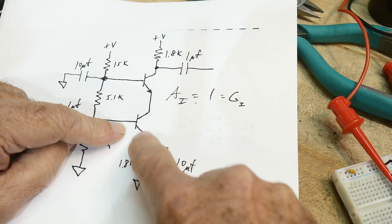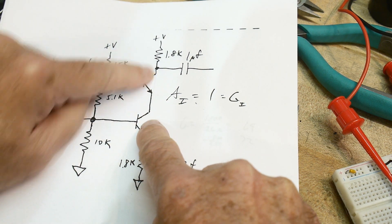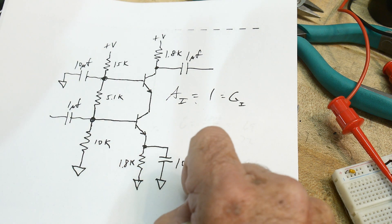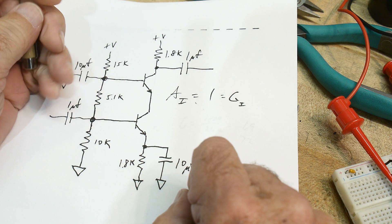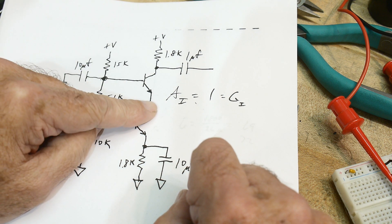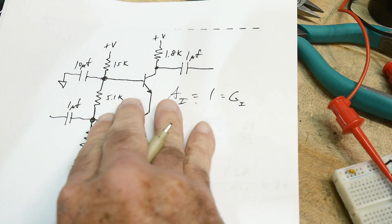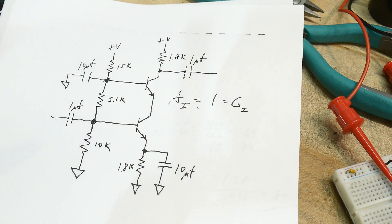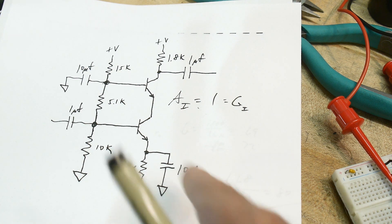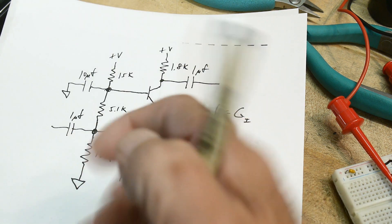And so whatever current wiggle you have here is exactly the same current wiggle you have here, right? Now, it also has a very low input impedance and basically negates this part of the circuit.